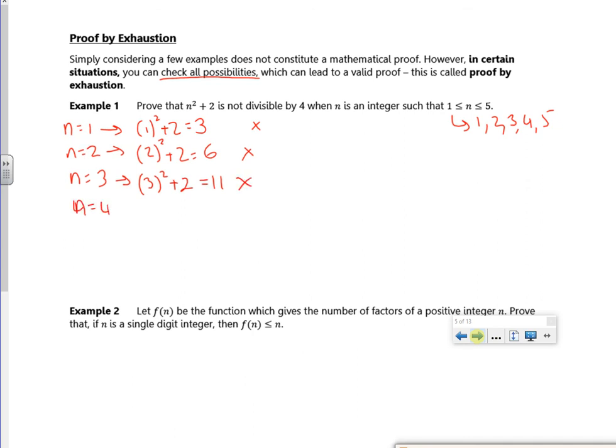If n is four, I get 18. That's not divisible by four. If n is five, that's not divisible by four. So the statement's false.